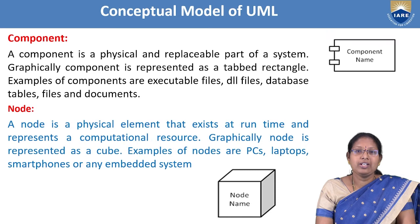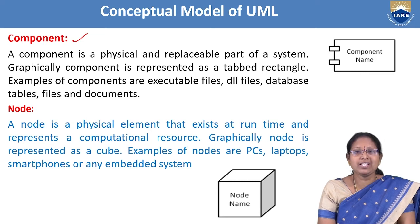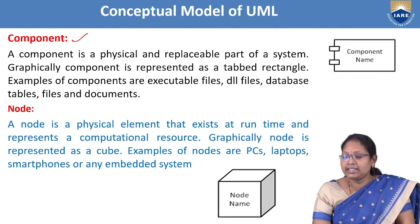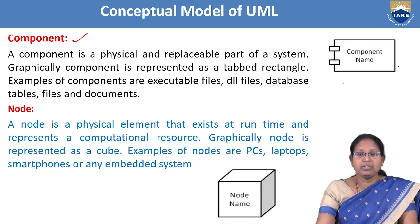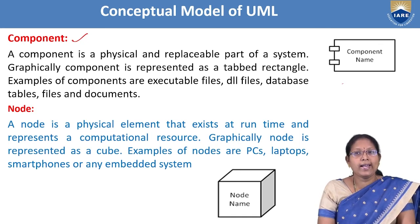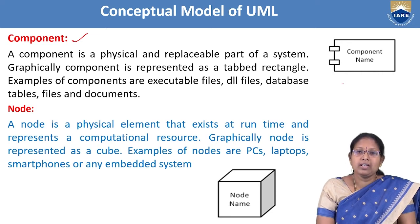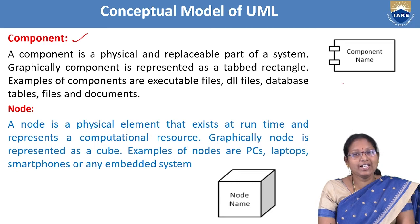The sixth structural thing is component. A component is a physical and replaceable part of the system. It is graphically denoted as a two-tabbed rectangular box. Components may include DLL files, library files, executable files, database tables, and other files maintained in the system.